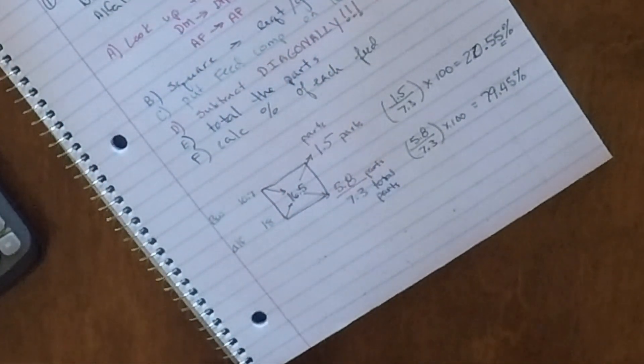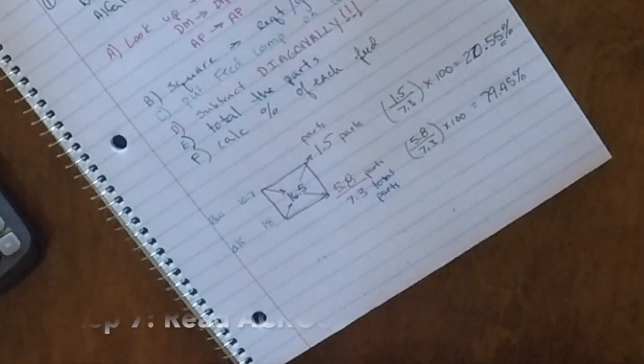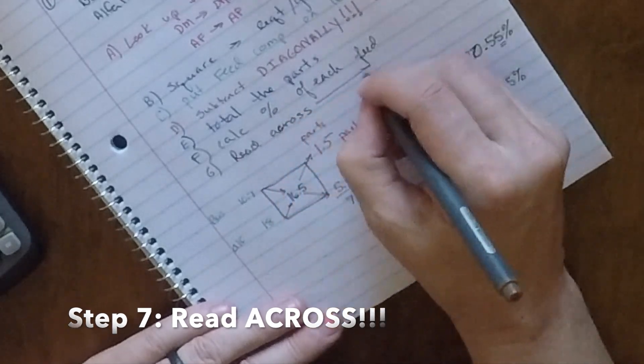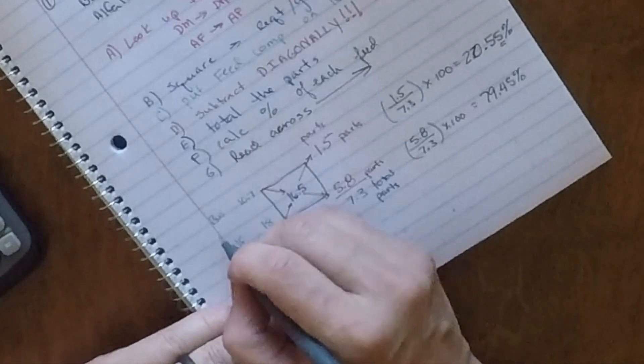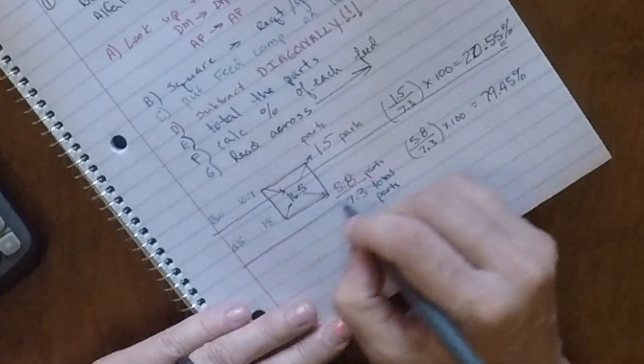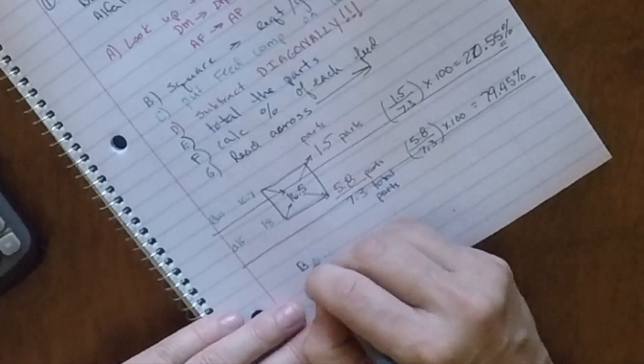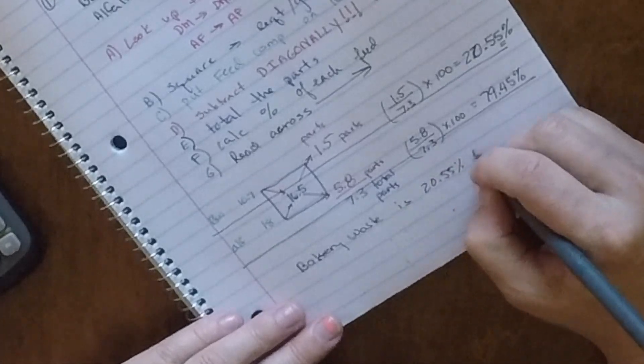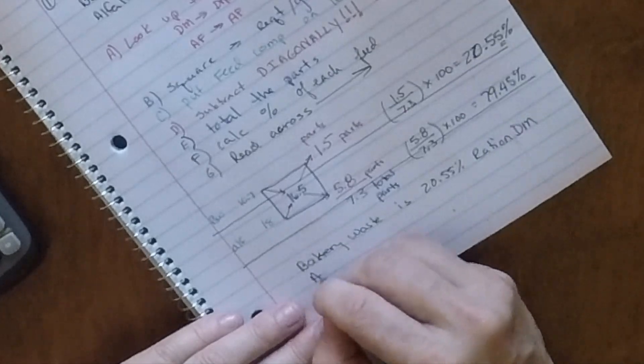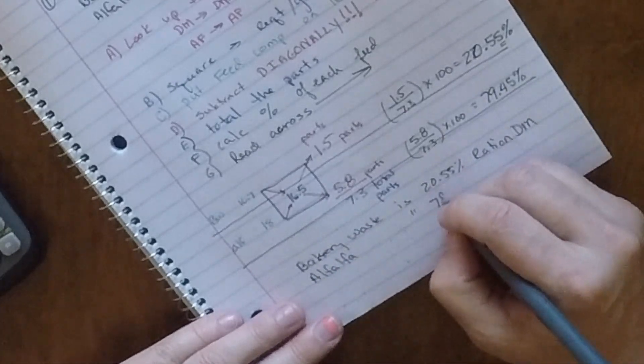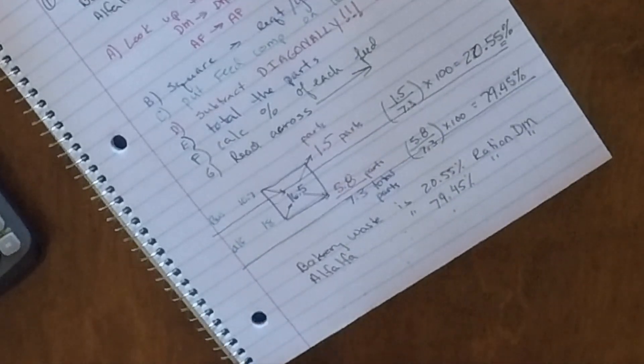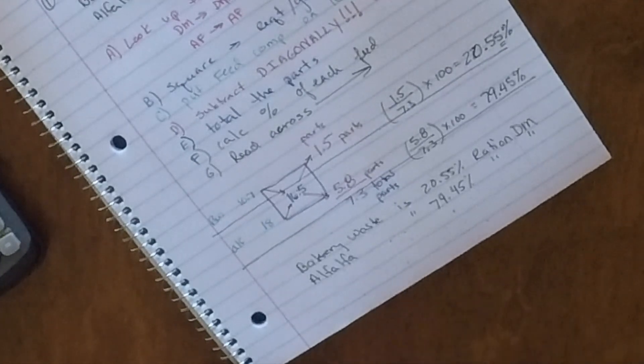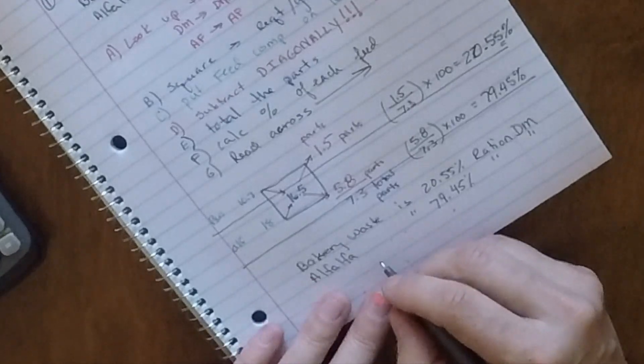The last step with the Pearson square is you're going to read across. While we subtract it diagonally, we actually read across. So the final ration is bakery waste is 20.55% of the ration dry matter. Alfalfa is 79.45% of the ration dry matter. So if I was to give this to someone to formulate, we can now formulate a ration because we know the appropriate ratio of the two ingredients. Just a note, these are all going to be done, except I think one of them asks for an as-fed basis. But all of these are on the dry matter basis.